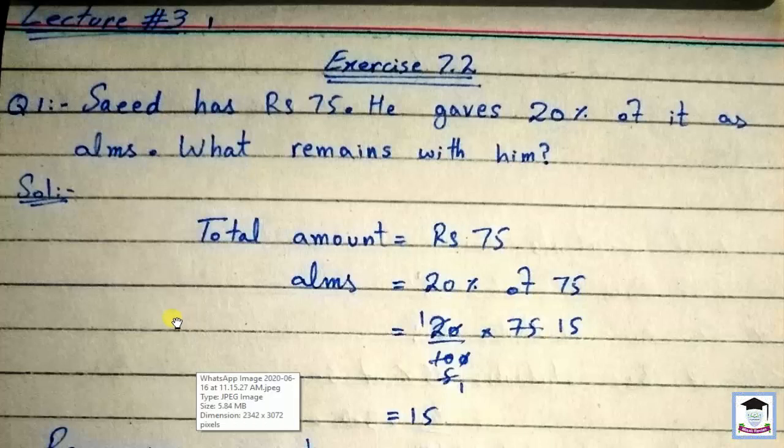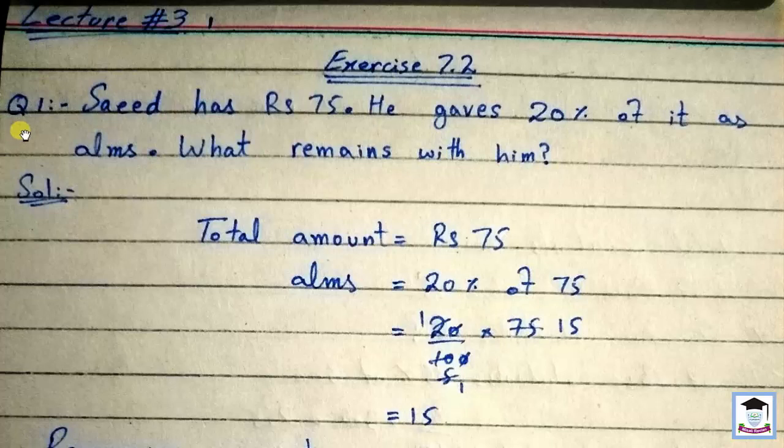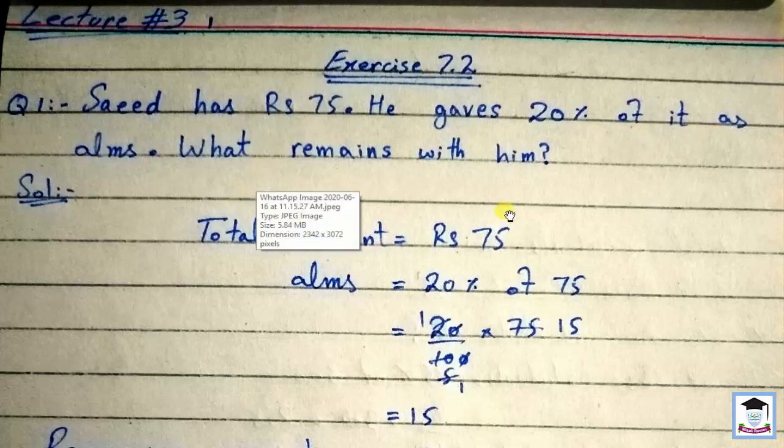Assalamu alaikum, Lecture number 3, Exercise 7.2. Question number 1: Saeed has 75 rupees. He gives 20% of it as alms. What remains with him? Total amount is 75. Alms is 20% of 75.